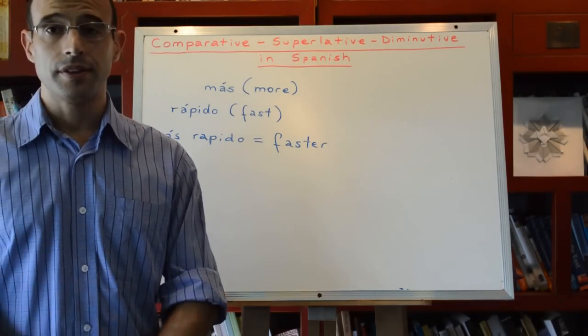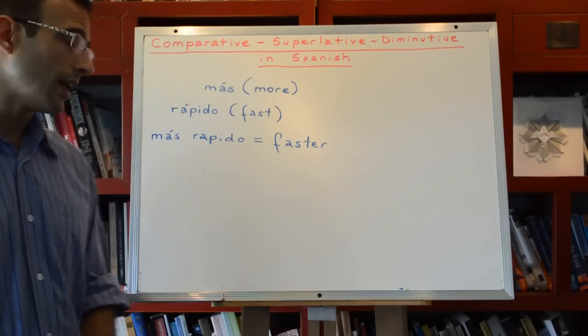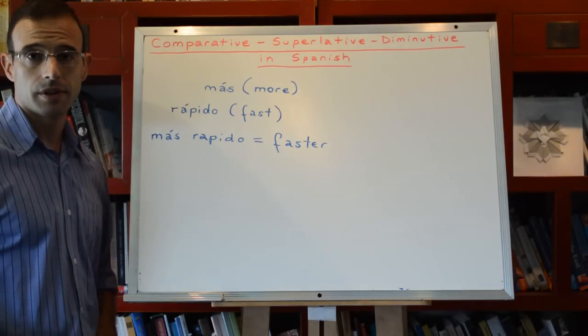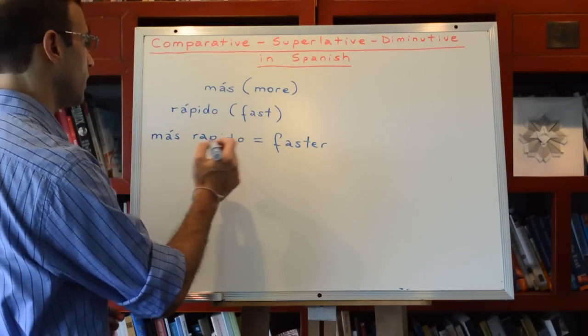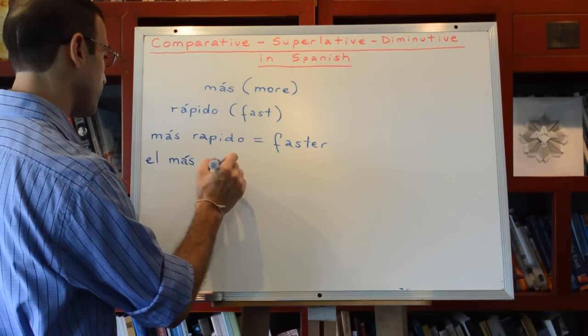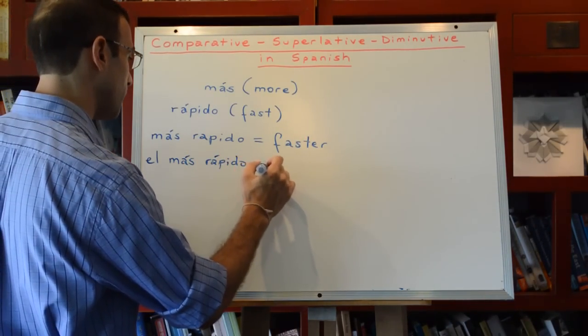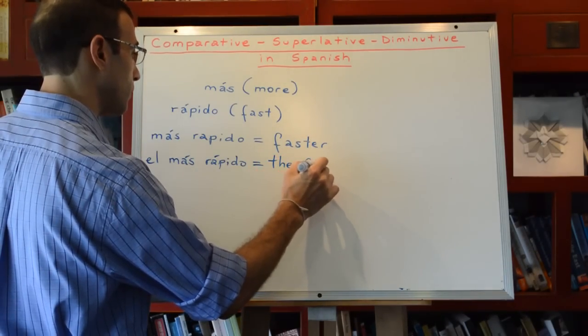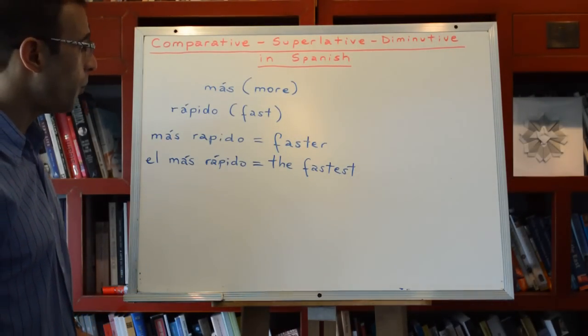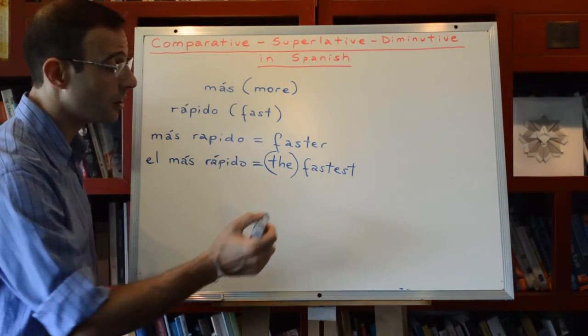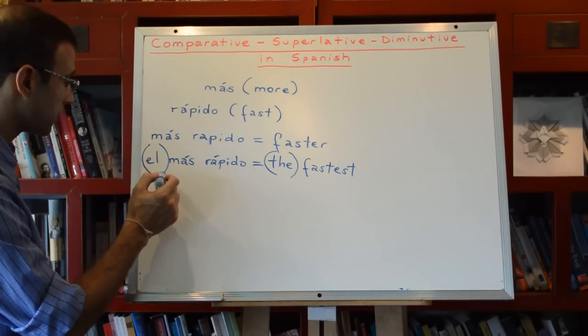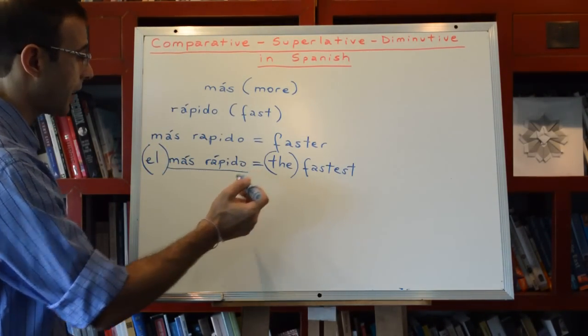Now, the superlative would be the same, but we just add the article before, at the beginning. El más rápido, for the fastest. So you see how straightforward this is. In the same way that in English for the superlative you add the article before the superlative, in Spanish you also add the article before más rápido.